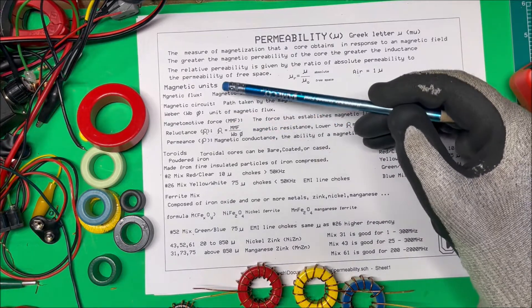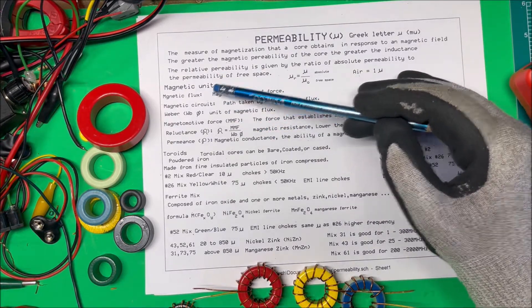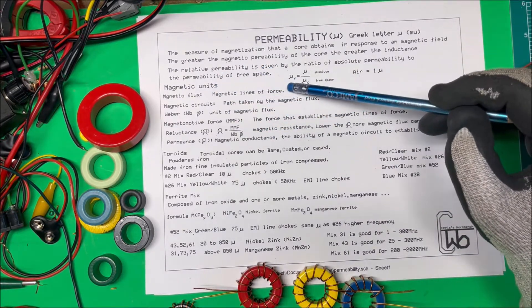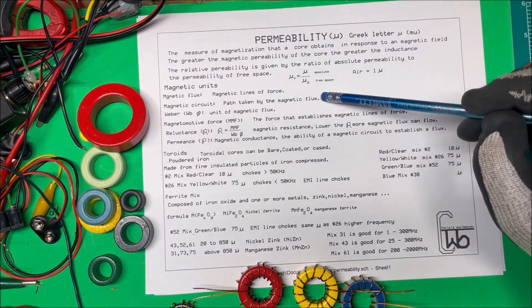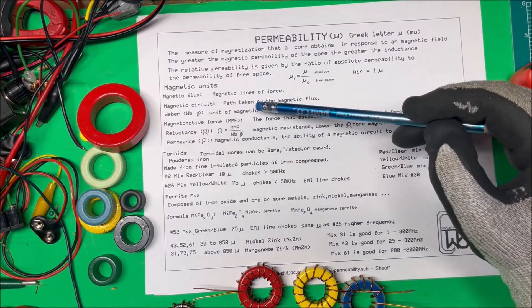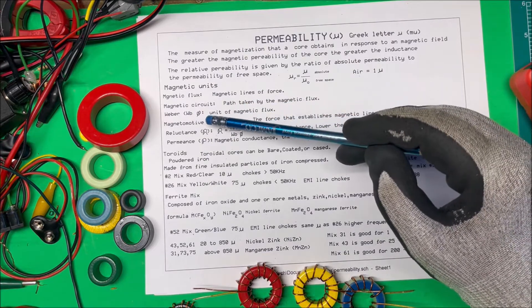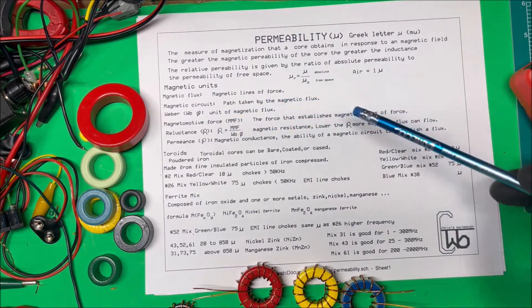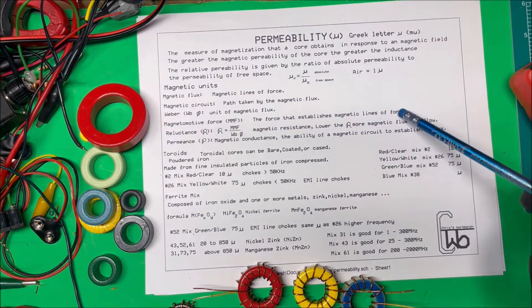Just to review some magnetic units: magnetic flux, that's the magnetic lines of force. Magnetic circuit, that's the path taken by the magnetic flux. Weber, that's a unit of magnetic flux. Magnetomotive force, MMF, that's the force that establishes magnetic lines of force.